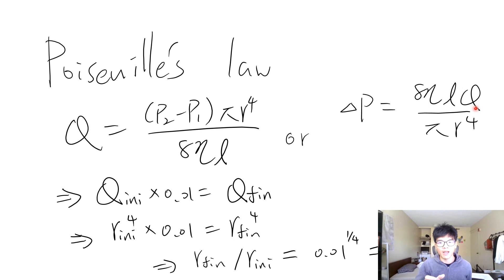Divided by pi r to the fourth. r is the radius of the pipe, assuming we're discussing a pipe or a straw, you know this kind of thing, the radius of this kind of tube.